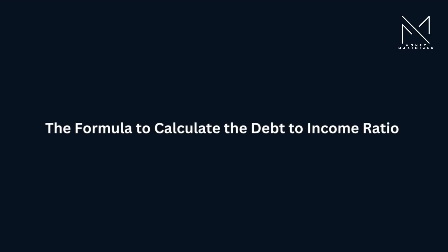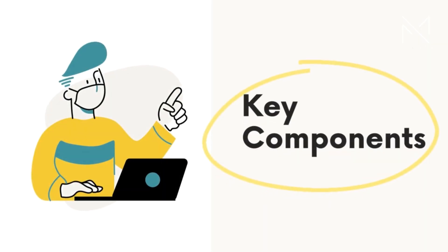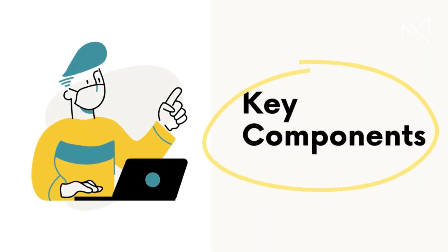The formula to calculate the debt-to-income ratio is as follows: the DTI ratio is calculated by dividing monthly debt payments by gross monthly income. Here's a breakdown of the key components and the significance of the debt-to-income ratio.